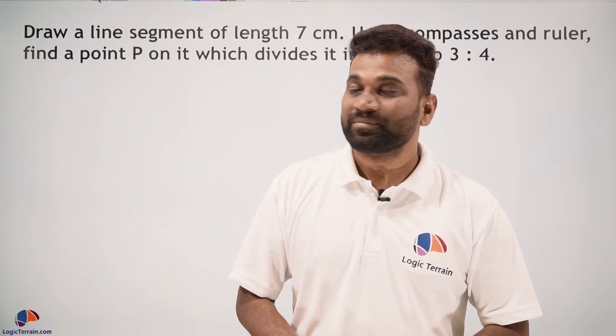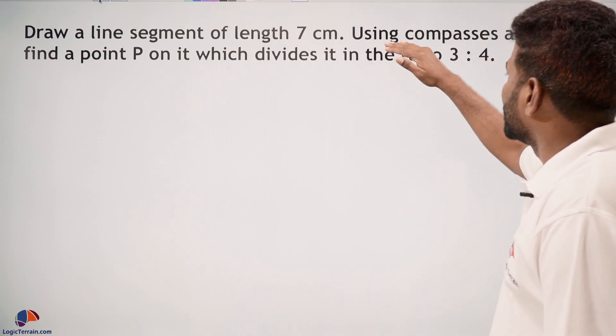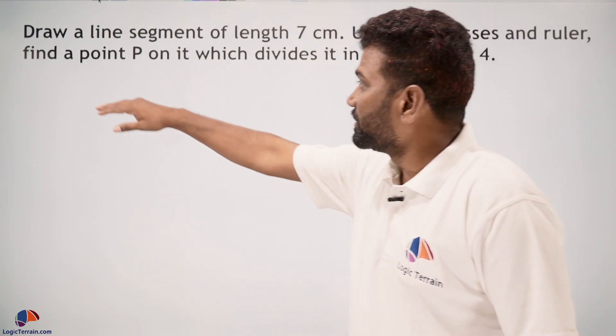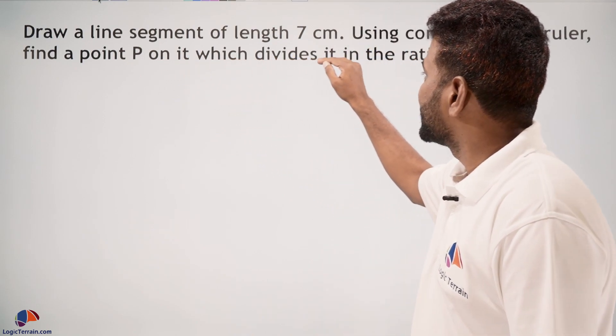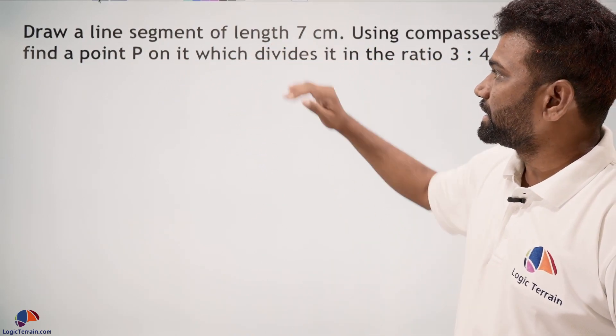Please follow carefully. Draw a line segment of length 7 centimeters using compasses and ruler. Find a point P on it which divides it in the ratio 3:4. So here in this question...